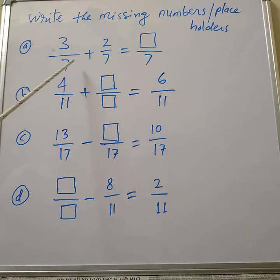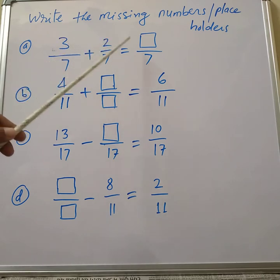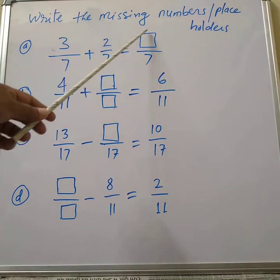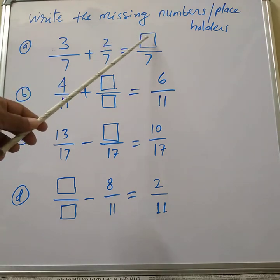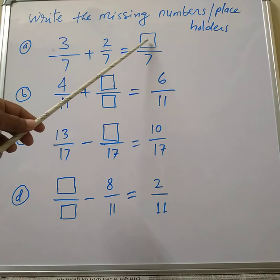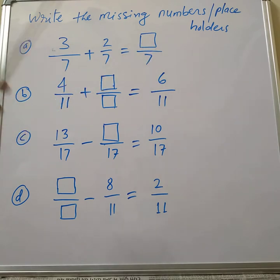Yes, you are right. Because both fractions have 7 as a denominator, we have to add the numerators. So 3 plus 2 equals 5. In this missing place, which number comes? 5. So it will be 5 by 7.